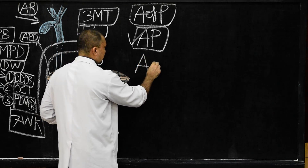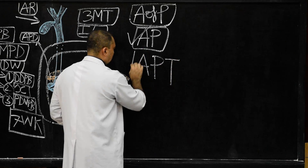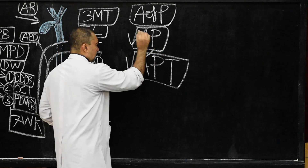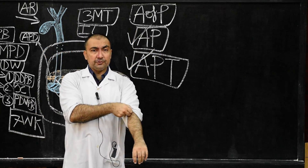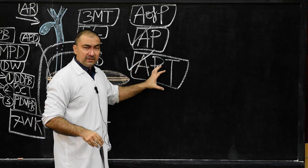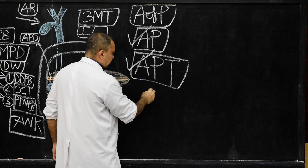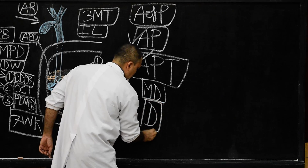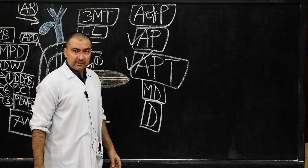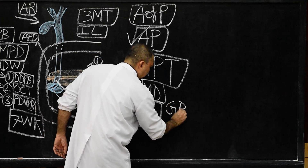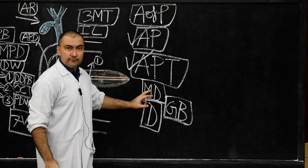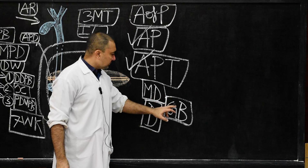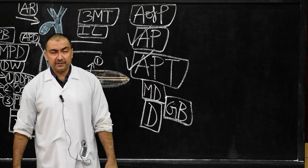The second anomaly is accessory pancreatic tissue, also known as accessory pancreas — frequently asked in MCQs. Accessory pancreatic tissue is found in three structures: the duodenum, Meckel's diverticulum, and the gallbladder. This concludes the development of the pancreas. Thank you very much.